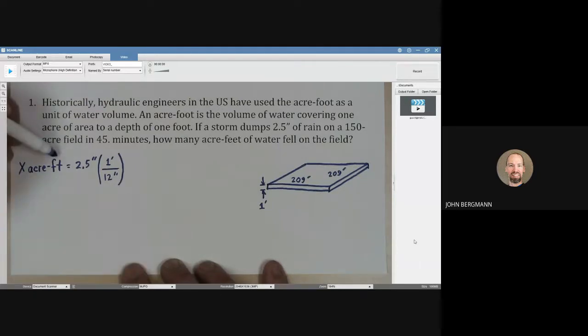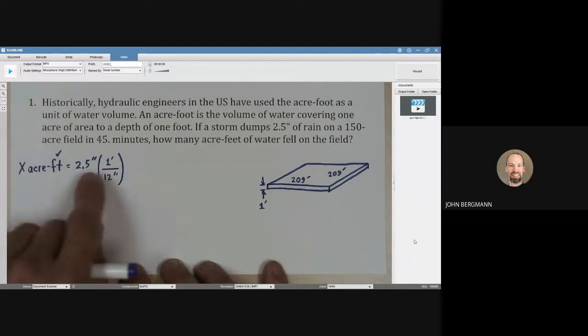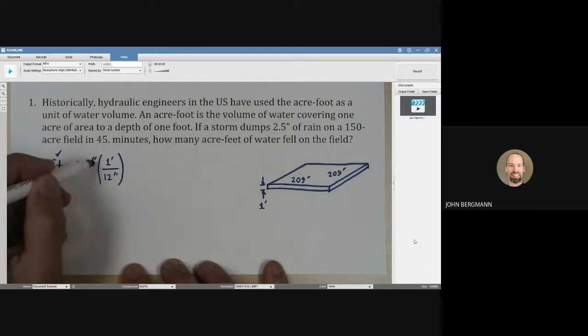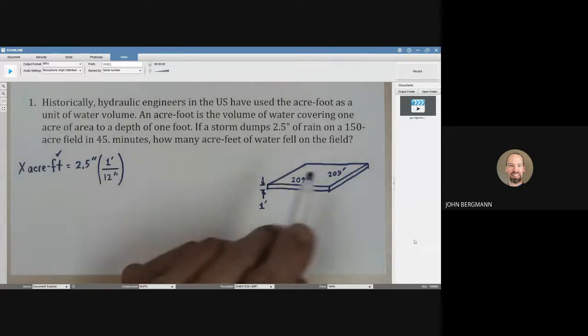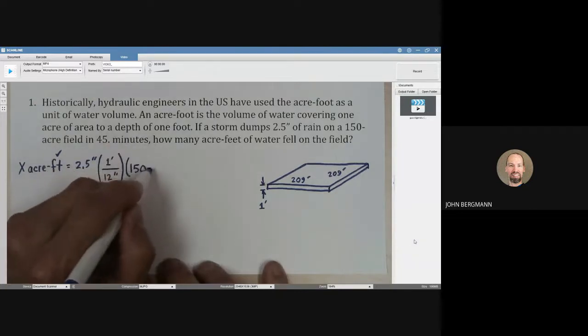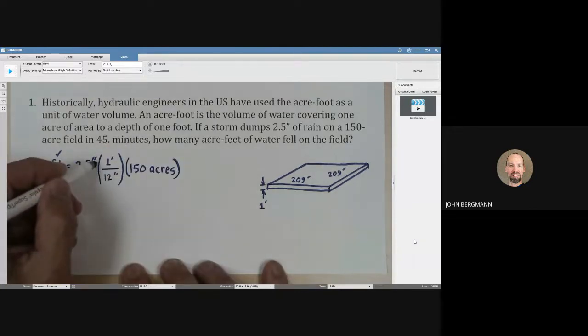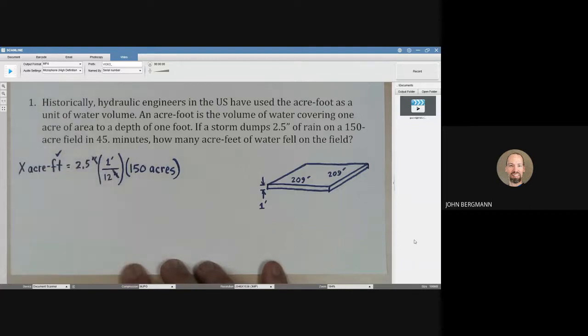Alright. So we have the feet part taken care of in our answer, acre feet. This will give us feet because the inches will cancel. And so it looks, according to our units, that we need to take the number of feet and multiply by the number of acres. So let's do that. How many acres? 150, we're told. 150 acres. Those inches units will cancel, and this will give us acre feet.